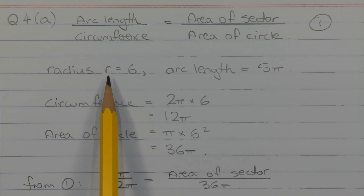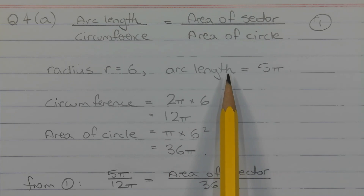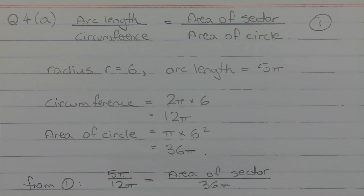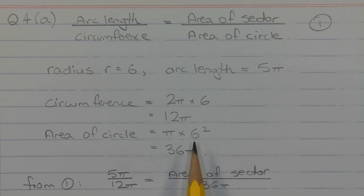The radius R in this case is equal to 6 and the arc length of the sector is 5 pi centimetres. The circumference of a circle with radius 6 centimetres is given by 2 pi times R, so 2 pi times 6 equals 12 pi centimetres. The area of a circle with radius 6 is given by pi R squared, so pi times 6 squared equals 36 pi square centimetres.